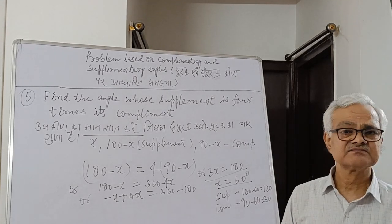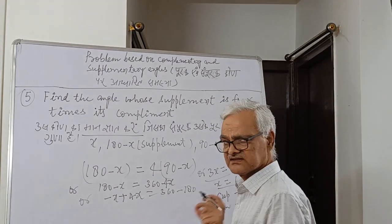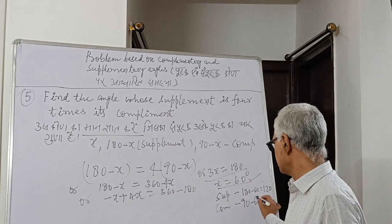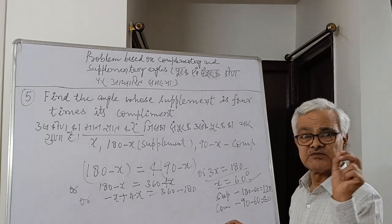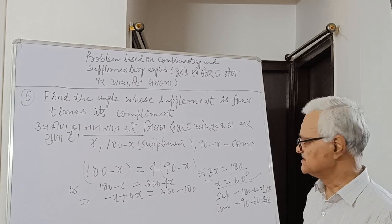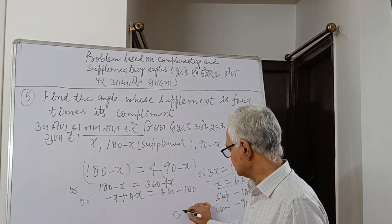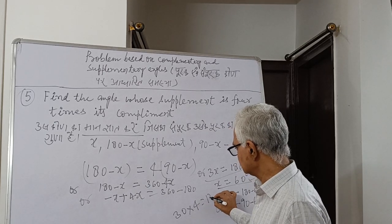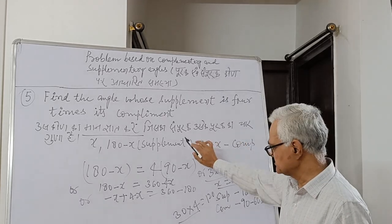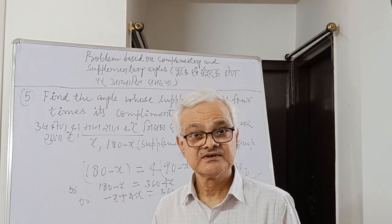So our answer is that the number is 60 degrees. We will verify: in verification we found the supplement is 120 and the complement is 30 degrees, and 120 is 4 times 30. The supplement is four times the complement. In this way we have solved the problem.